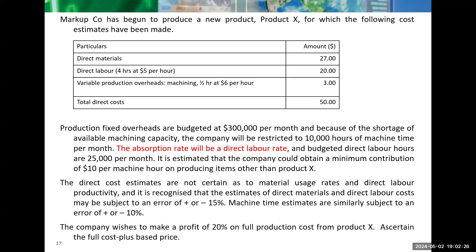Production fixed overheads are budgeted at $300,000 per month. Because of the shortage of available machining capacity, the company will be restricted to 10,000 hours of machine time per month. This is again relevant — as you would have seen in the lecture last week on limiting factors. The absorption rate will be the direct labor rate, and the budgeted direct labor hours are 25,000 hours per month. It is estimated that the company could obtain a minimum contribution of $10 per machine hour on producing items other than Product X.